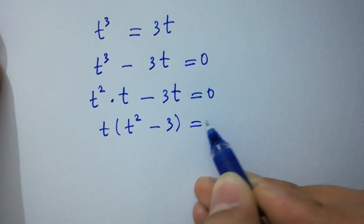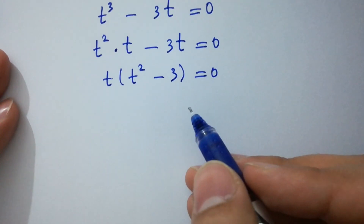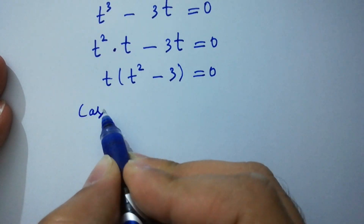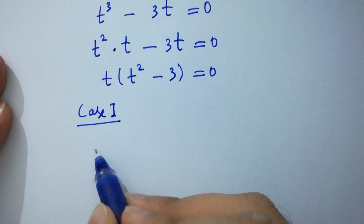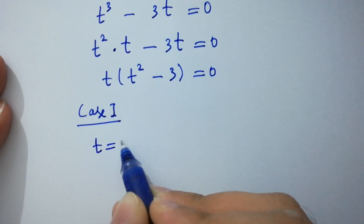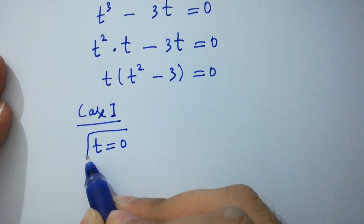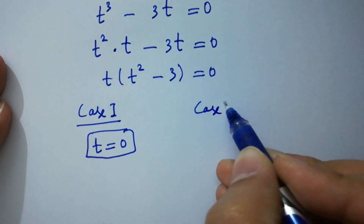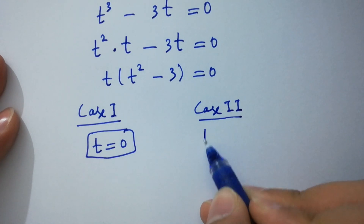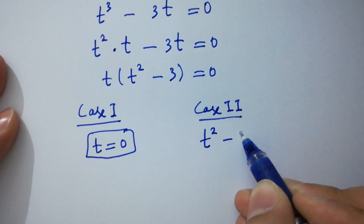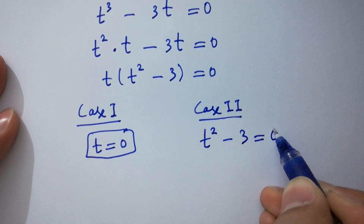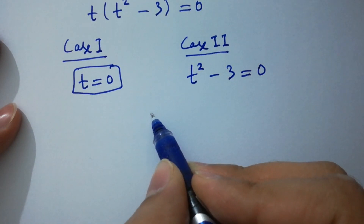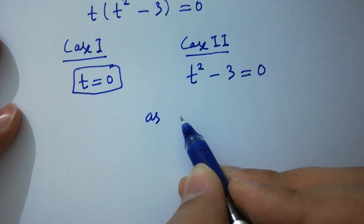So we have t cubed equal to 3t, which can be written as t cubed minus 3t equal to 0. We have two cases here: case 1, t equal to 0, and case 2, t squared minus 3 equal to 0.